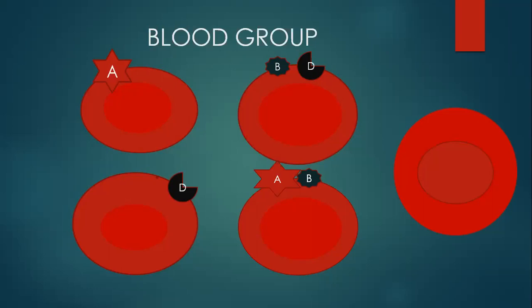When we say you are Rhesus positive, what we mean is that you have the D antigen on your red blood cells. So if you have B and D, you are B positive; if you have A and D, you are A positive. A red blood cell with no A or D antigen is called O negative. One that has only the D antigen makes that person O positive — they don't have A or B antigen, just the D antigen.